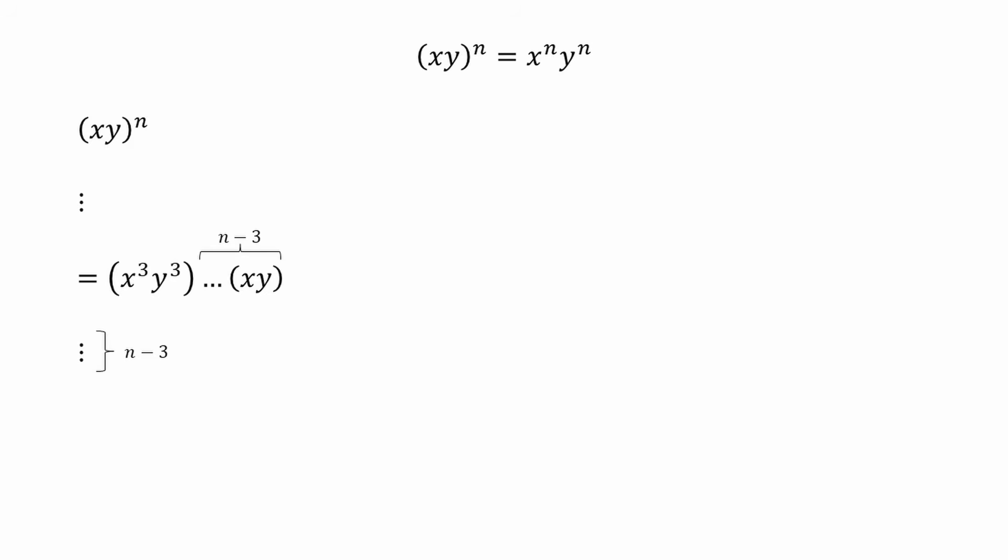Then repeat the same step n minus 3 number of times. We will get x^n product y^n. End of proof.